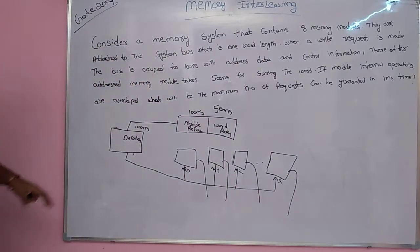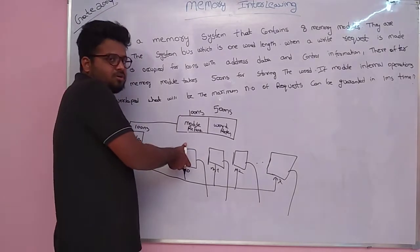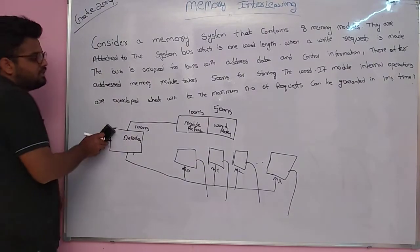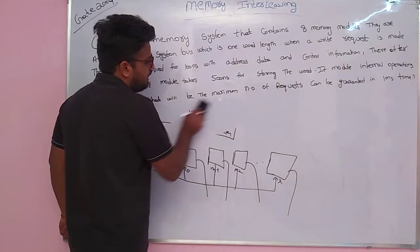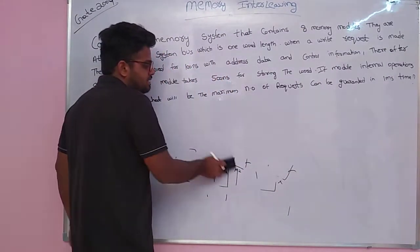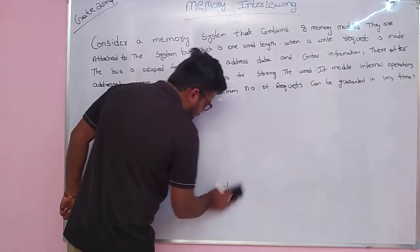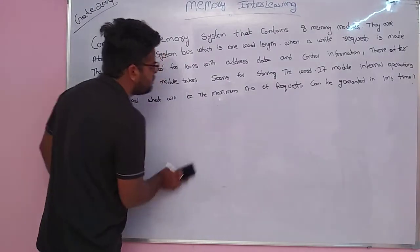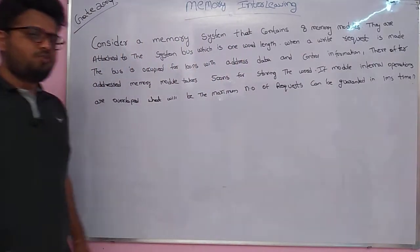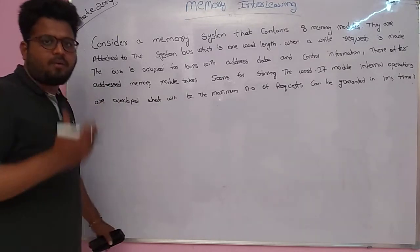So, module reference is 100 nanoseconds for the decoder, and accessing the module requires 500 nanoseconds. You have eight modules. If you can overlap, how many requests can you ask in one millisecond? Let us see whether we can overlap or not.